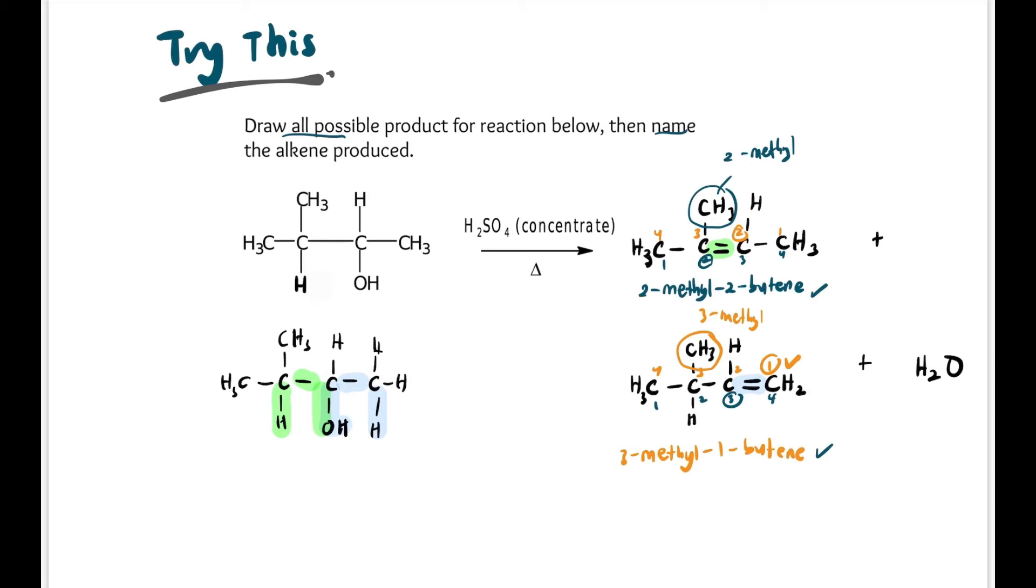If you're still confused with this naming you can refer to the nomenclature video 3.2. So for example, if they ask which one is the major product, let's check. The top one - this is its C=C double bond. On the left there are 2 CH3, on the right 1 CH3, so it has 3 R groups.